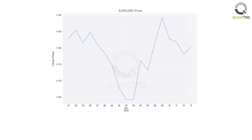Consider the price series of EURUSD as shown on screen. How can you create a trading strategy on this series? You might be thinking of selling EURUSD at $1.183 and buying at $1.164, and booking the profit of $0.019. You identified the trading pattern correctly: sell high and buy low.